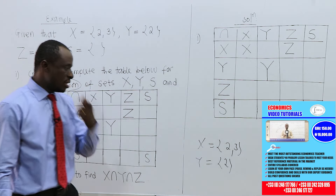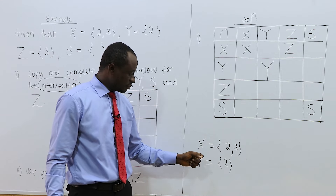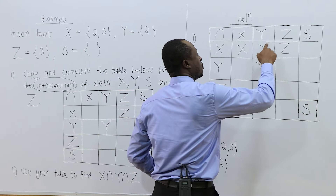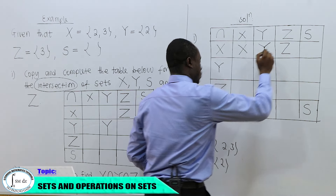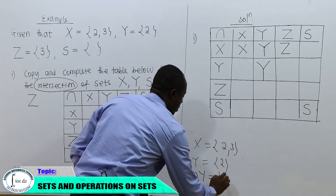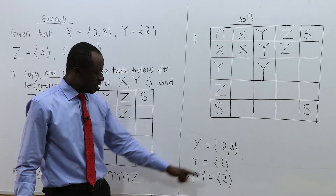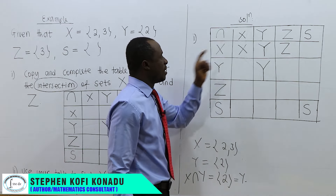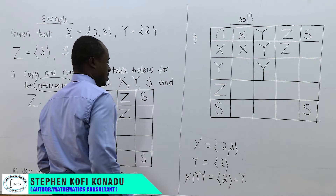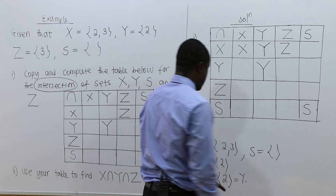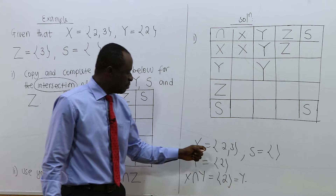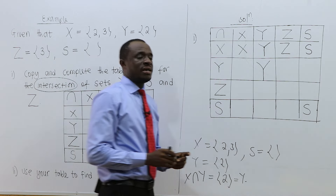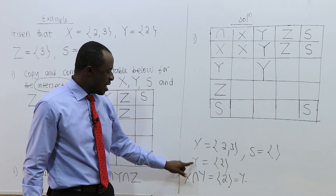Now, X intersection Y. What is Y? Y is the set {2}. The element common to X and Y is 2, and 2 is the same as Y. So X intersection Y is Y. Now, X intersection S — X is {2, 3} and S is the empty set. There is no common element, so X intersection S is the empty set.